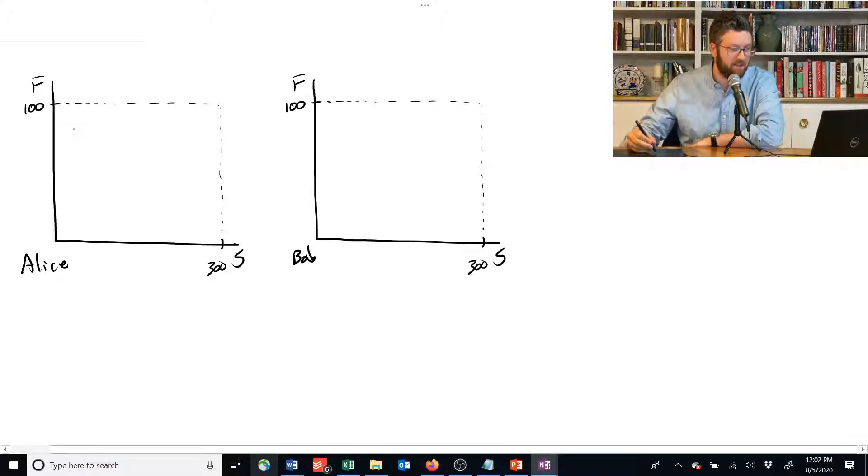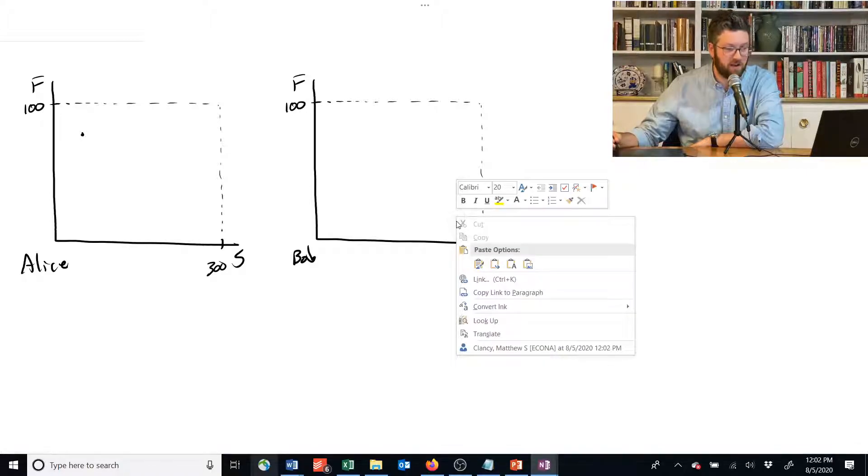Let's put Alice up here. So she's got most of the food but not a lot of the shelter. And we'll put Bob down here, so he's got most of the shelter but not a lot of food.